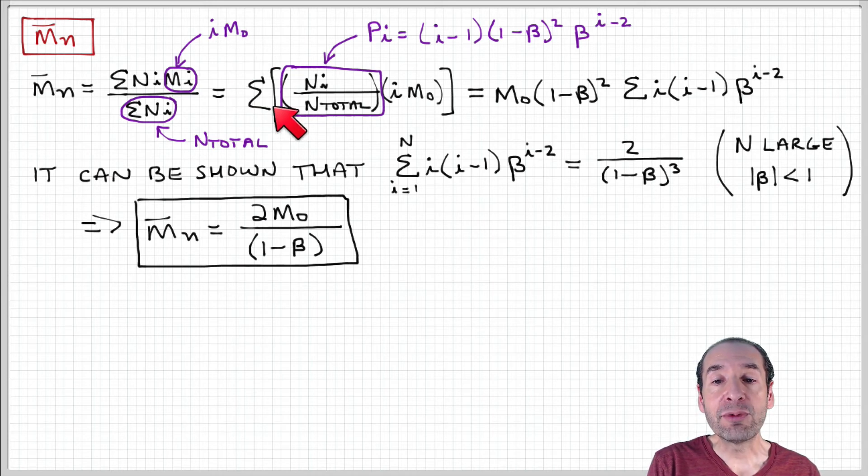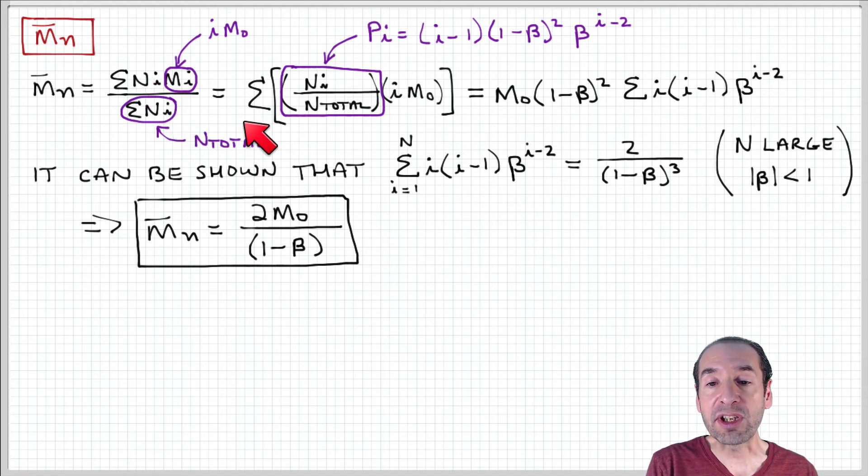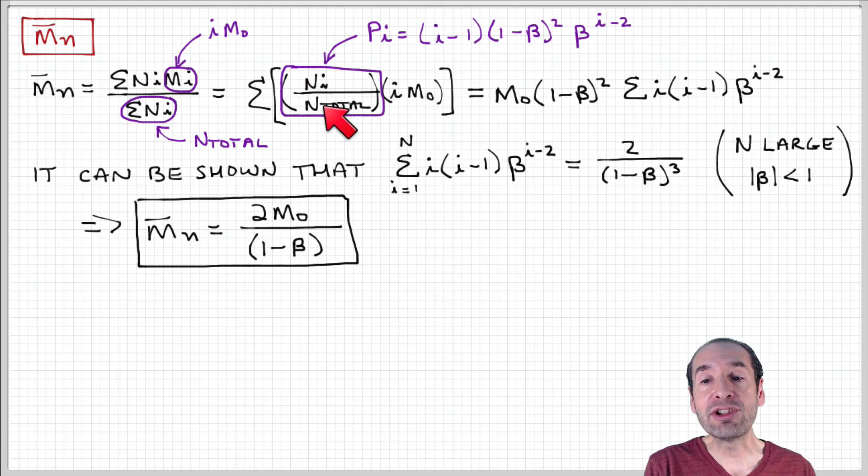So if I rearrange this, then I can bring this constant, n-total, inside this summation, and rewrite it this way. I have the sum of n-i over n-total times i-m-not.